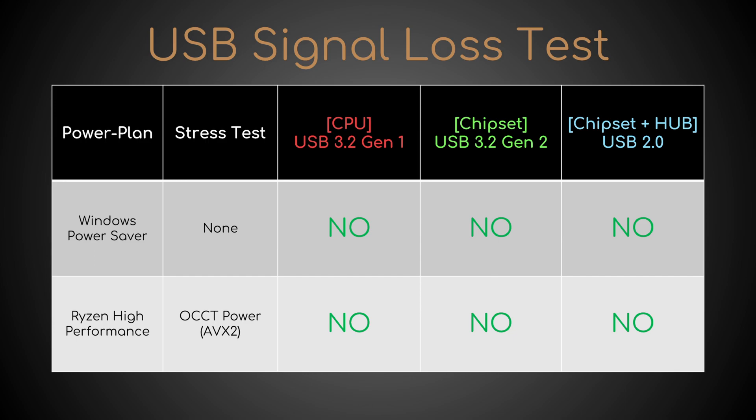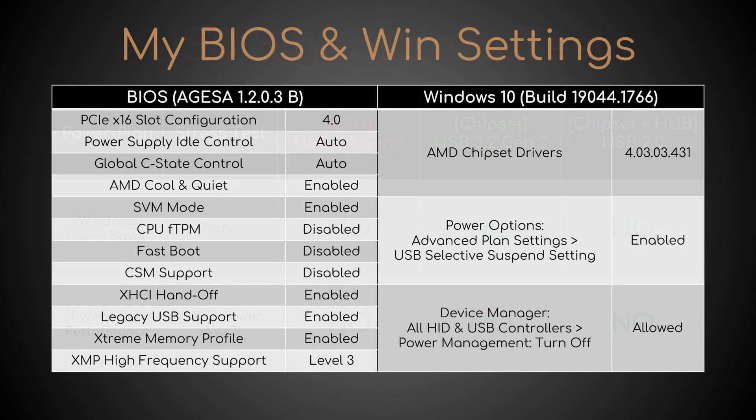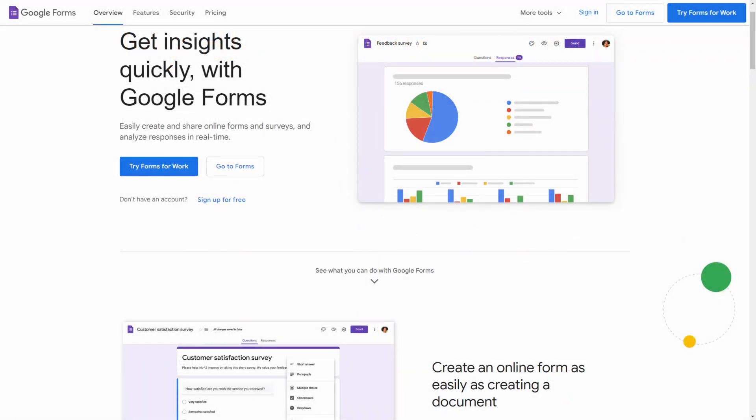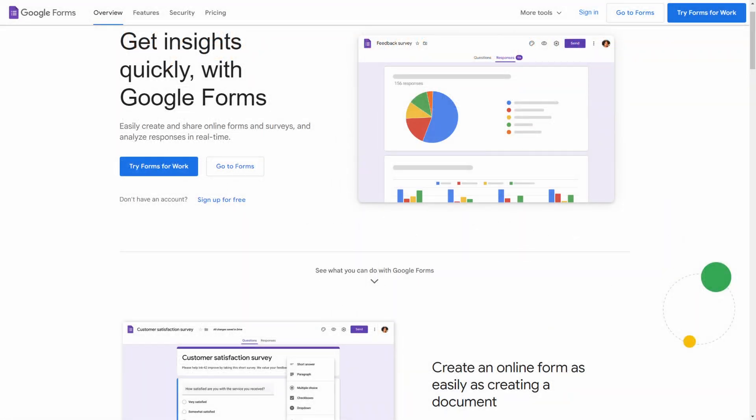Now, where do we go from here? Ideally, we should find the common denominator among all those who suffer from intermittent USB connectivity. I reckon the best way to do this is a comprehensive survey via Google Forms. Let me know if you would like me to make it.